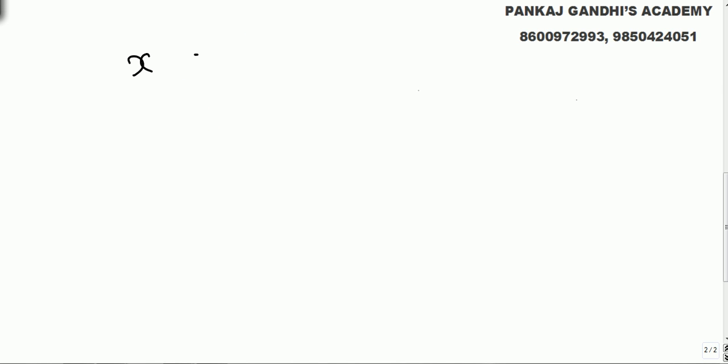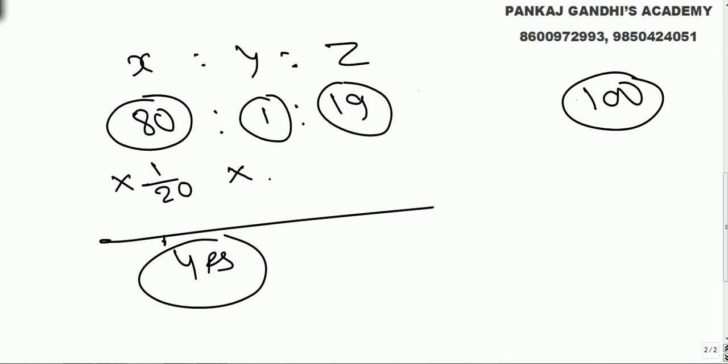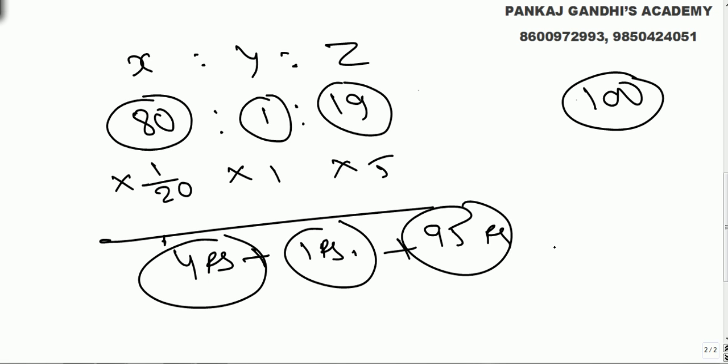We got x as to z ratio 80 as to 19. The only possible total birds are 100, only one way is 80, 19, remaining 1. Cost per 1 by 20 is 4 rupees, cost per 1 is 1 rupee, and cost per 5 gives us 95 rupees. So in all we have got 100 rupees.